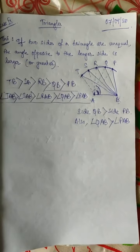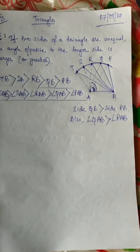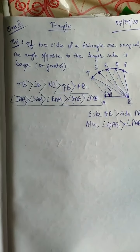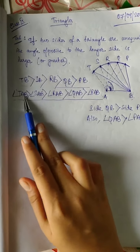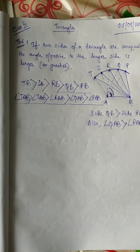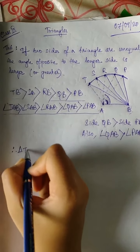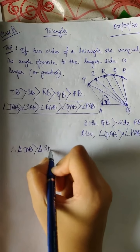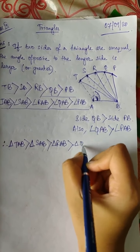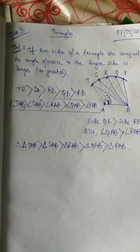In congruent triangles we already learned that if the triangle's sides and angles are the same, the triangles are the same. Now if the angles and sides are bigger, then the triangle becomes bigger. So the biggest triangle here will be triangle TAB, the whole triangle will be the biggest. Then next we have SAB, then RAB, then QAB, and then PAB. Therefore triangle TAB is the longest triangle, followed by SAB, RAB, QAB, and PAB.